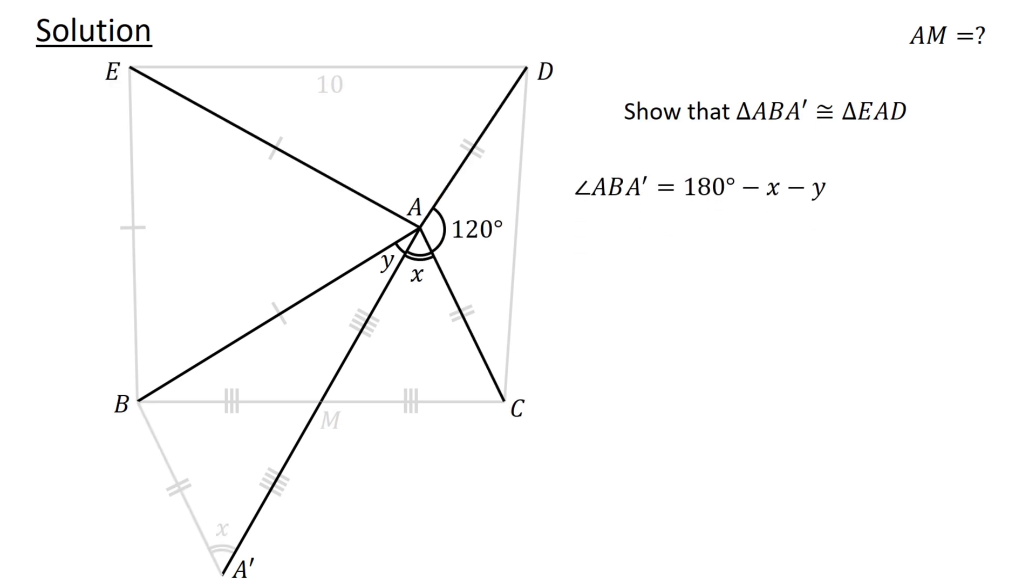Next, consider these five line segments. Since angle EAB is an interior angle of an equilateral triangle, it equals 60 degrees.